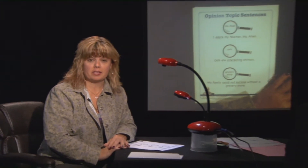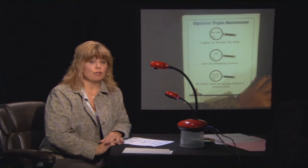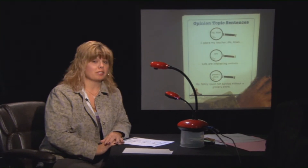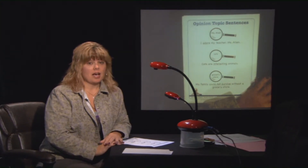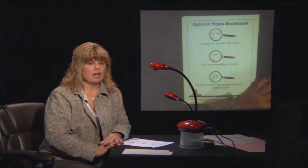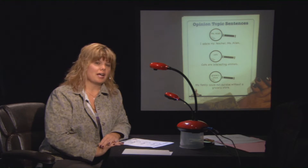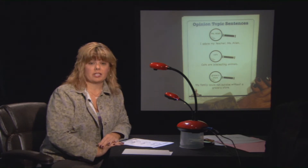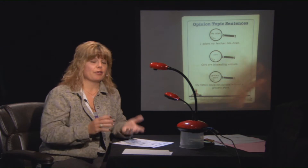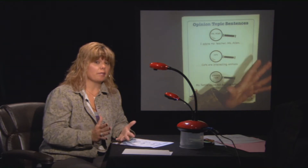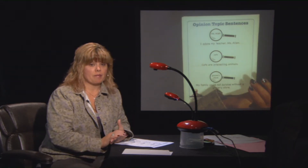In second grade, you have three kinds of topic sentences. The first one is an opinion topic sentence — that's how you feel about something. The second kind is a number topic sentence, and that includes either a number word or an exact number. The third kind is the most fun of all: it's where you make a combo topic sentence, where you put your opinion and the number together to make a combo.